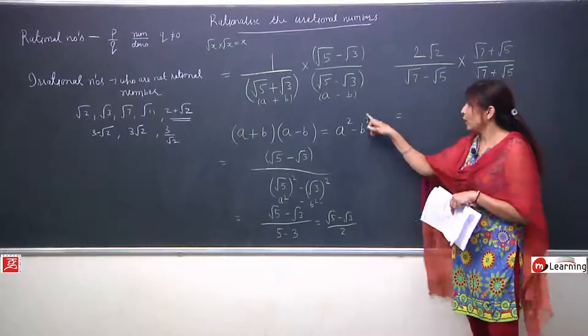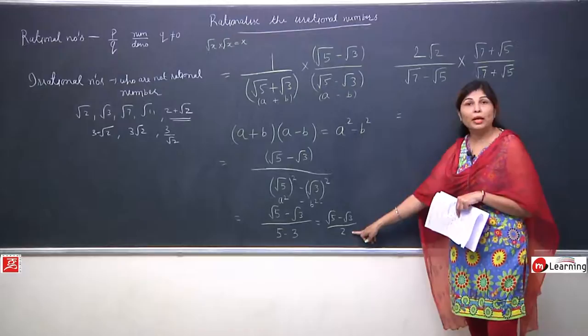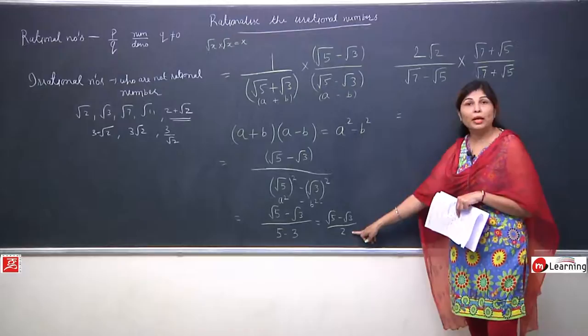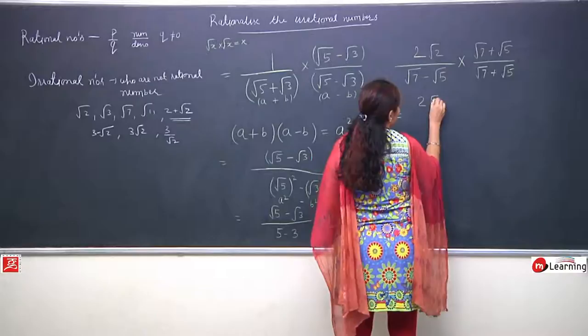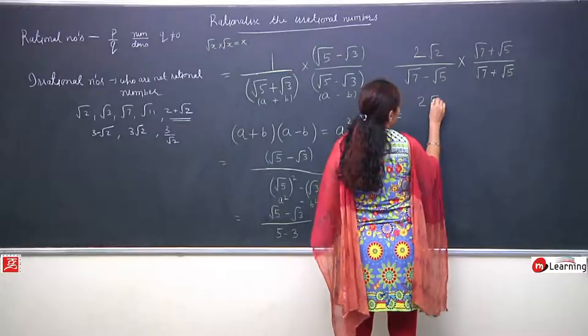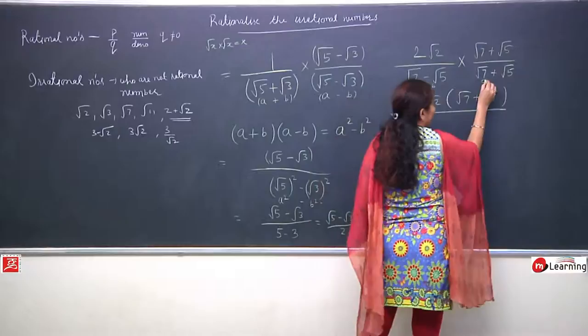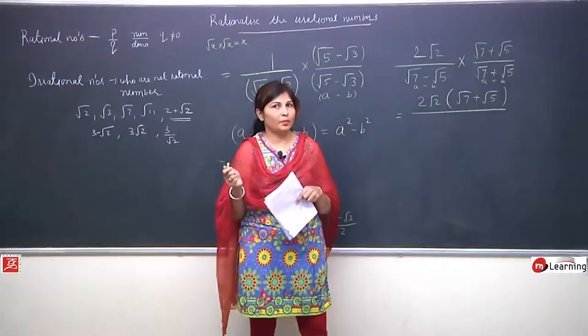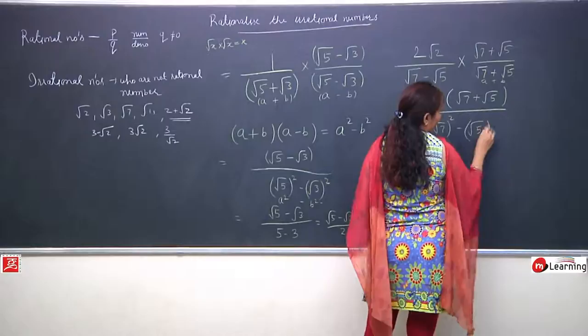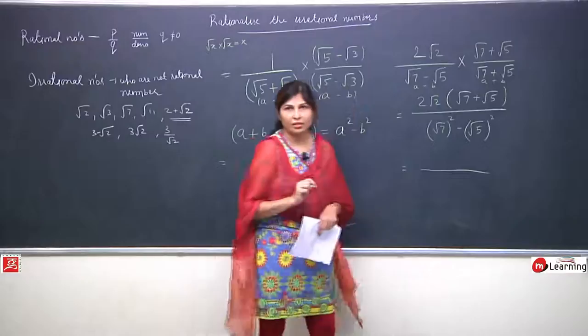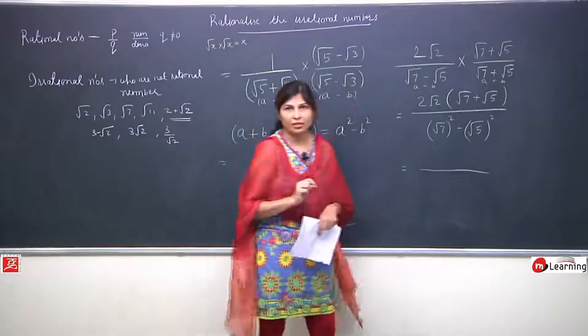Again this identity's part starts. See how useful this identity is. All square roots are removed and it has become a plain number. This identity is very useful, and its purpose in rationalization is to remove the irrational number from the denominator. So 2 root 2 multiplied by (root 7 + root 5) upon denominator: this is (a - b) and this is (a + b), which equals a² - b², giving root 7 squared minus root 5 squared.